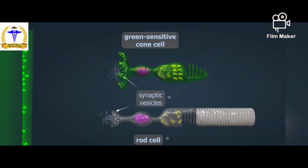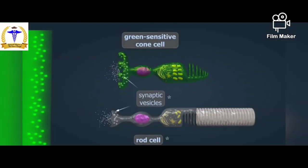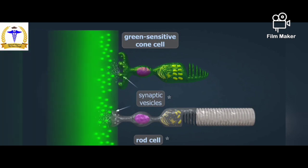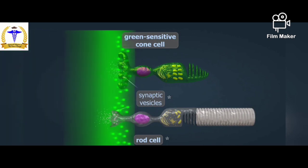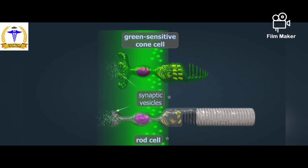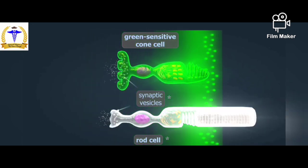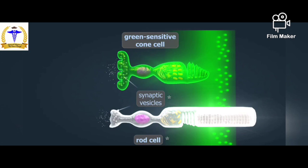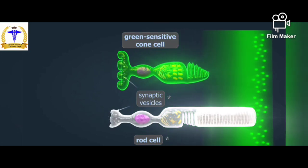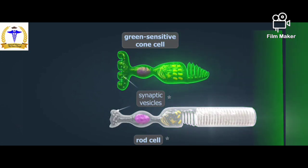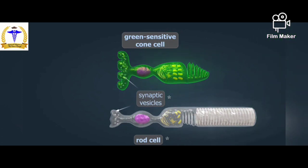In darkness, cones and rods continuously release a neurotransmitter called glutamate, which blocks bipolar cells. Light causes the receptor cells to hyperpolarize — that is, to produce an electric impulse. This stops the release of glutamate; therefore, bipolar cells are unblocked and they produce action potentials.